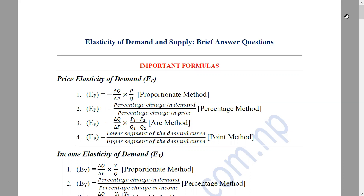So, the question is: first of all, we have two elasticity concepts — price elasticity of demand and price elasticity of supply. Demand elasticity is of 4 types: price, income, cross, and advertisement elasticity. So we have a formula that we have to keep in mind.